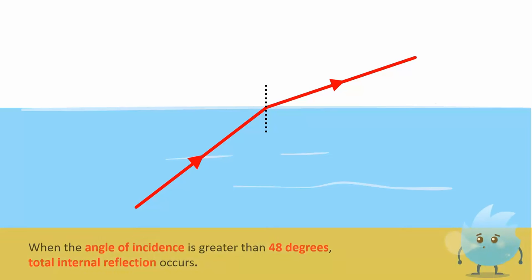Fish Eye View. When light travels from water to air, it bends away from the normal at the boundary of water. But when the angle of incidence is greater than 48 degrees, total internal reflection occurs.